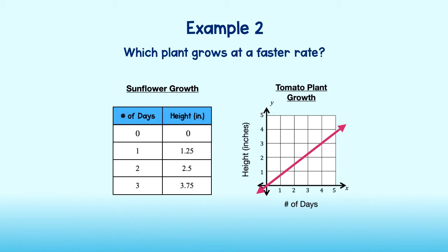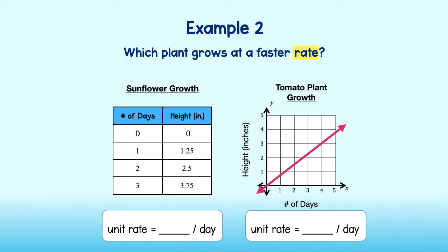Let's take a look at another example. Here, you will see the data pertaining to the growth of both a sunflower and a tomato plant. We want to figure out which plant grows at a faster rate. We are trying to figure out the rate of each plant. I see that both sets of data show the plant's growth over a period of days. It will be most beneficial if we can find the unit rate, or the rate at which each plant grows per one day.